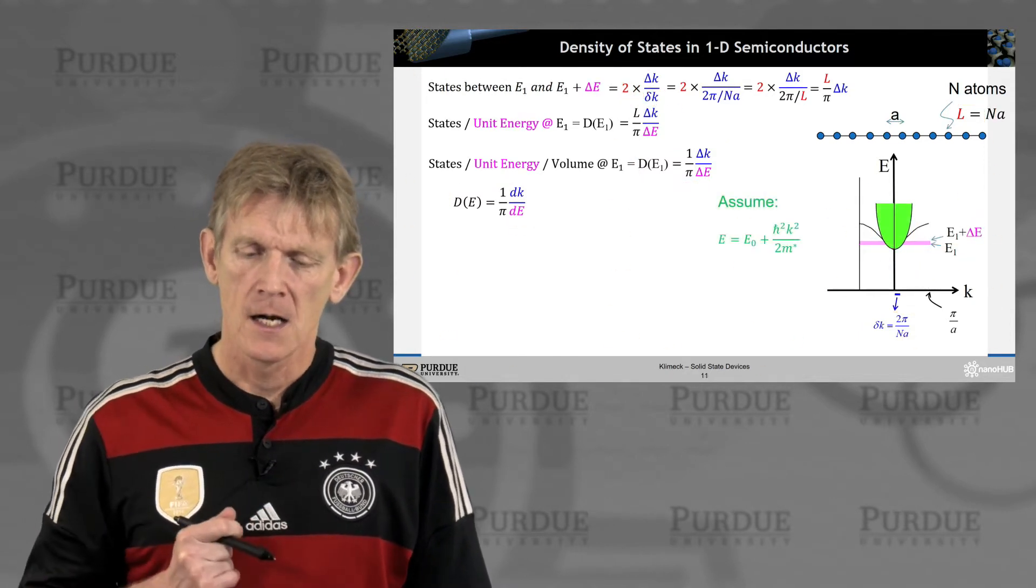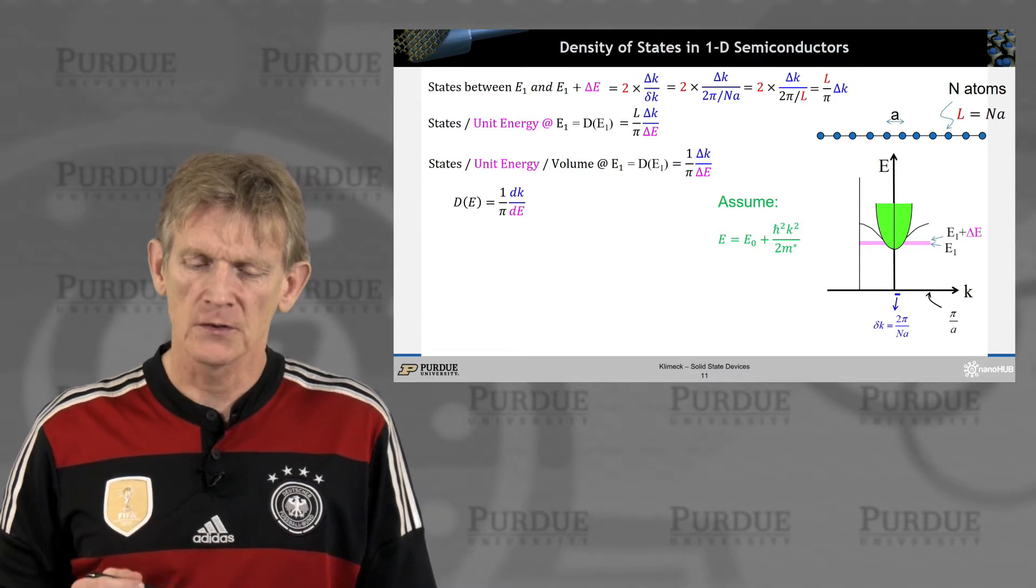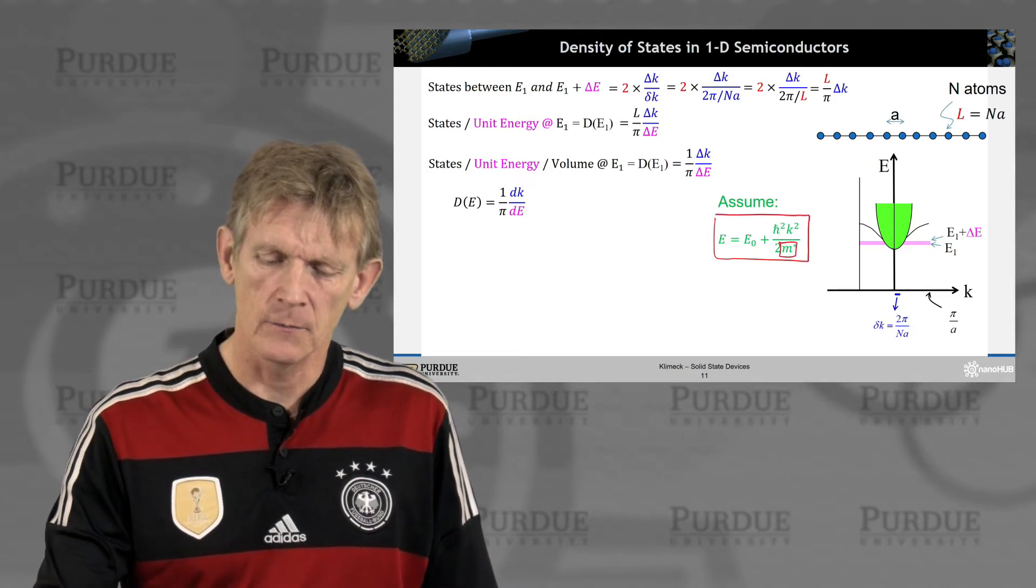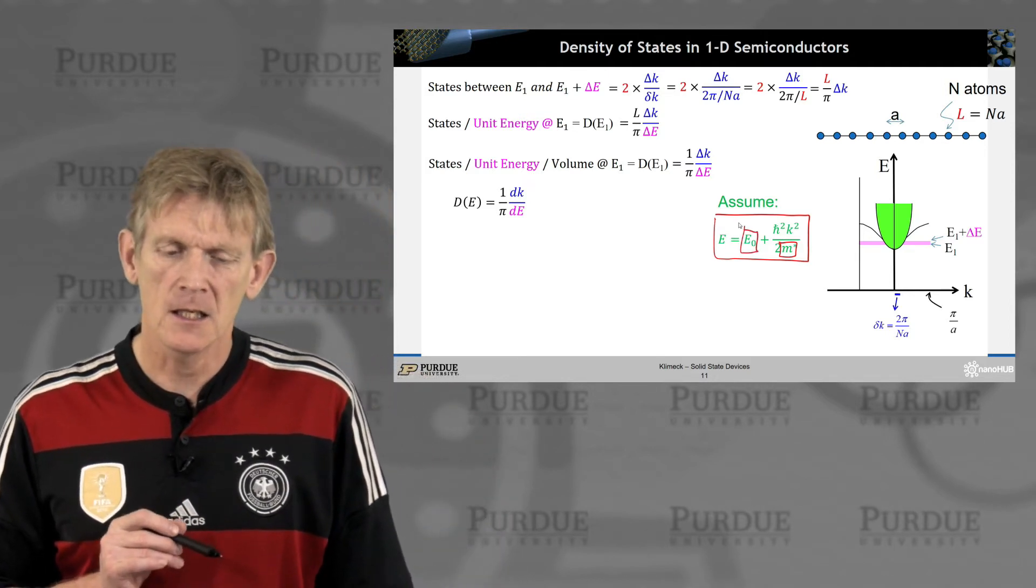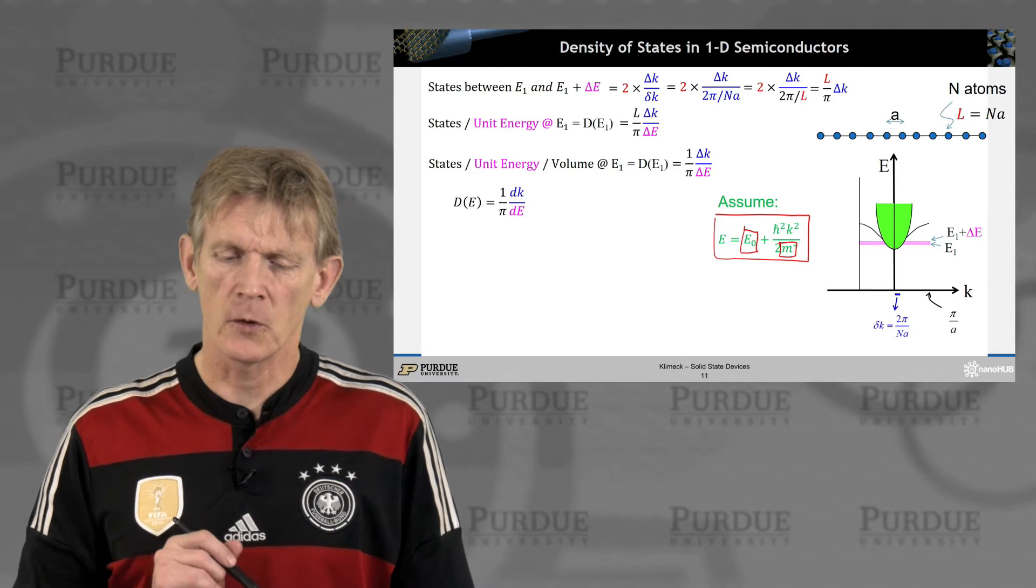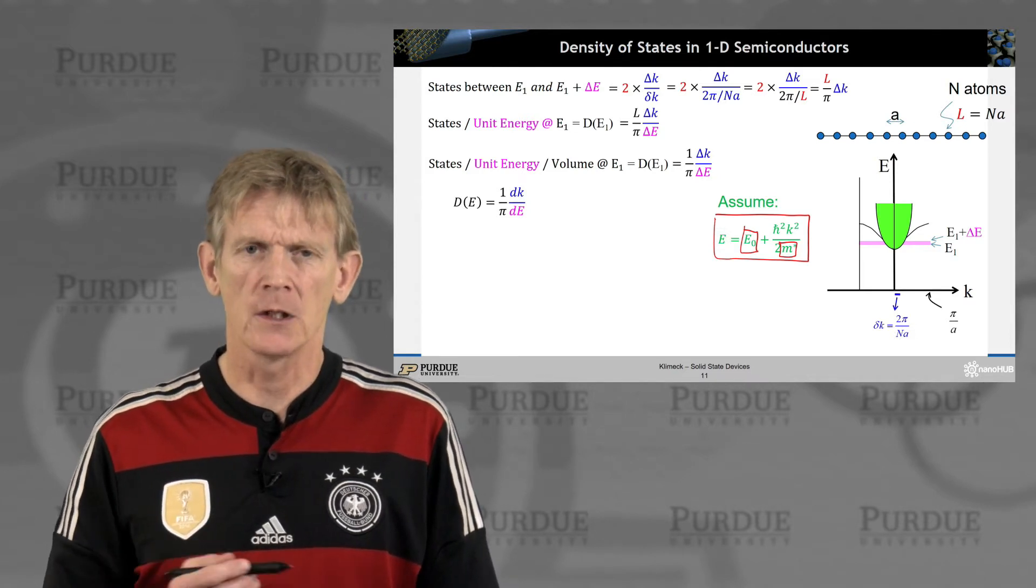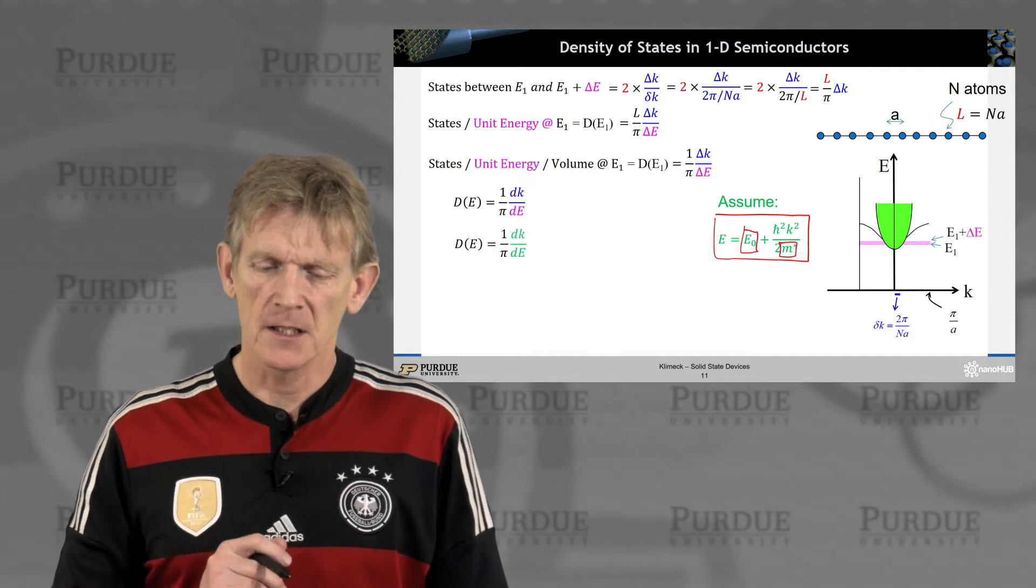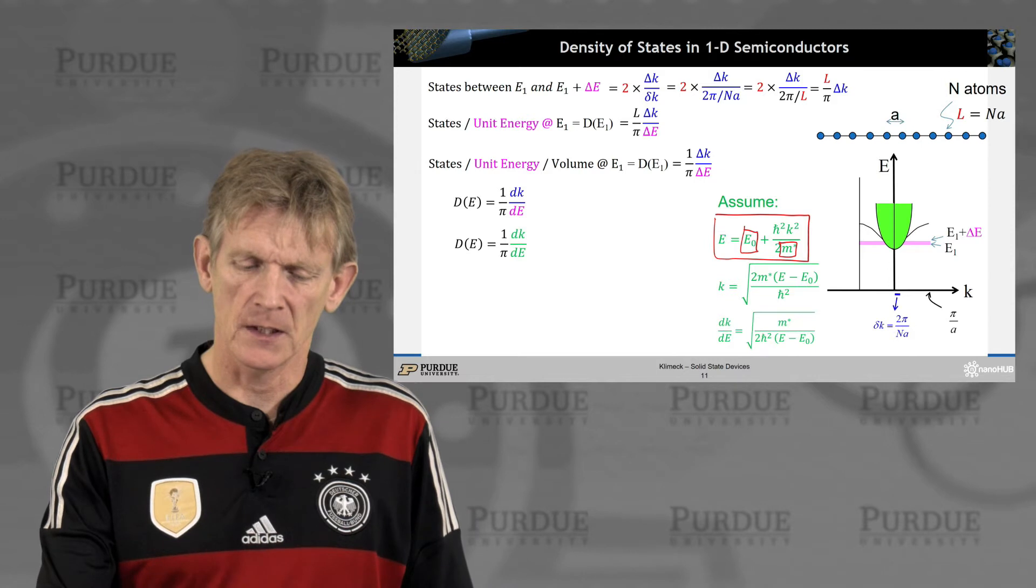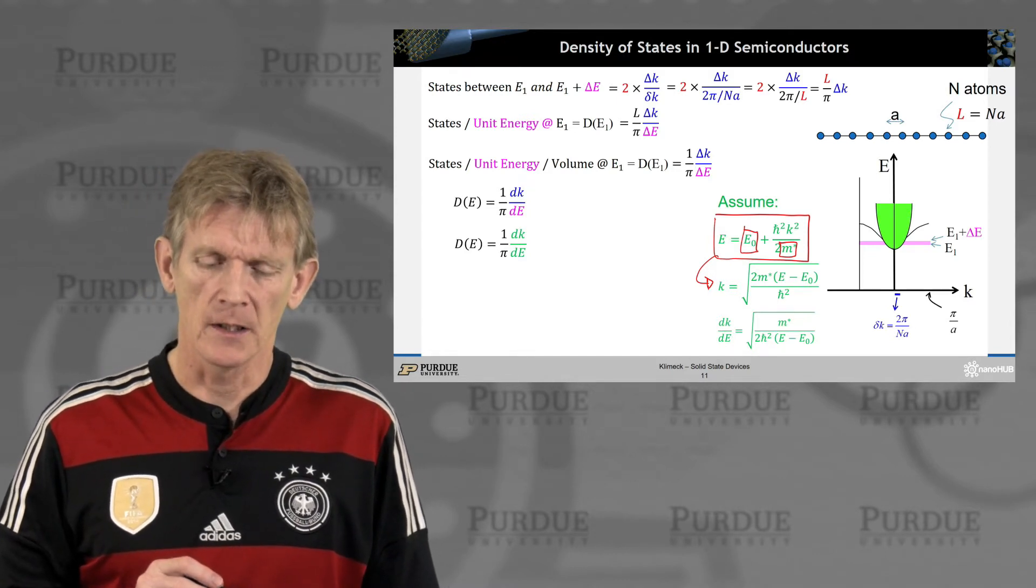All right. So let's divide this through the energy slab here. We want to make this differentially small and calculate the differential number of states in the system. We divide by the volume, and that gives us our density of states in a discretized form. Now, obviously, you can make this computationally, even conceptually, infinitesimally small, especially if you consider n as an extremely large number, where the separation delta k becomes infinitesimally small as well.